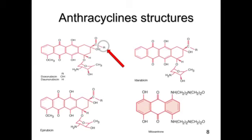These structures illustrate that doxorubicin and daunorubicin differ only by a hydroxyl group. Even though they're structurally very similar, they have somewhat different distinct patterns of clinical activity. Daunorubicin and idarubicin are used primarily in acute leukemias, whereas doxorubicin and epirubicin have broader activity against solid tumors. Mitoxantrone is structurally different but still has those three hexagonal rings, giving it somewhat similar activity.